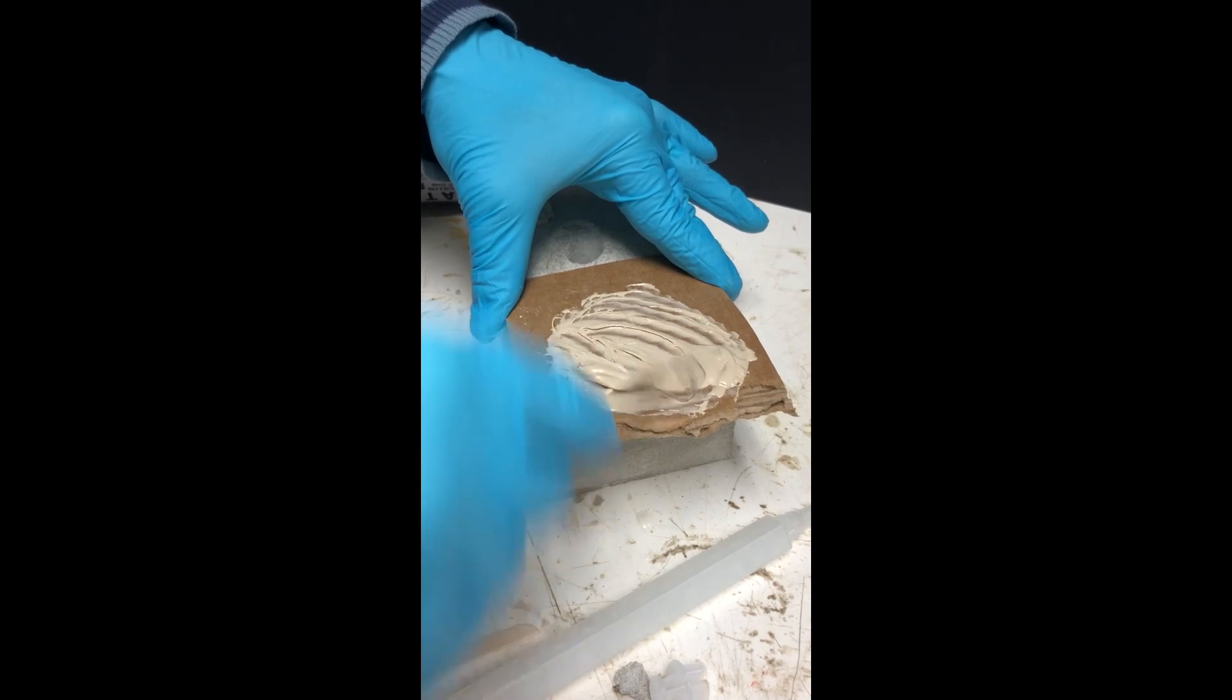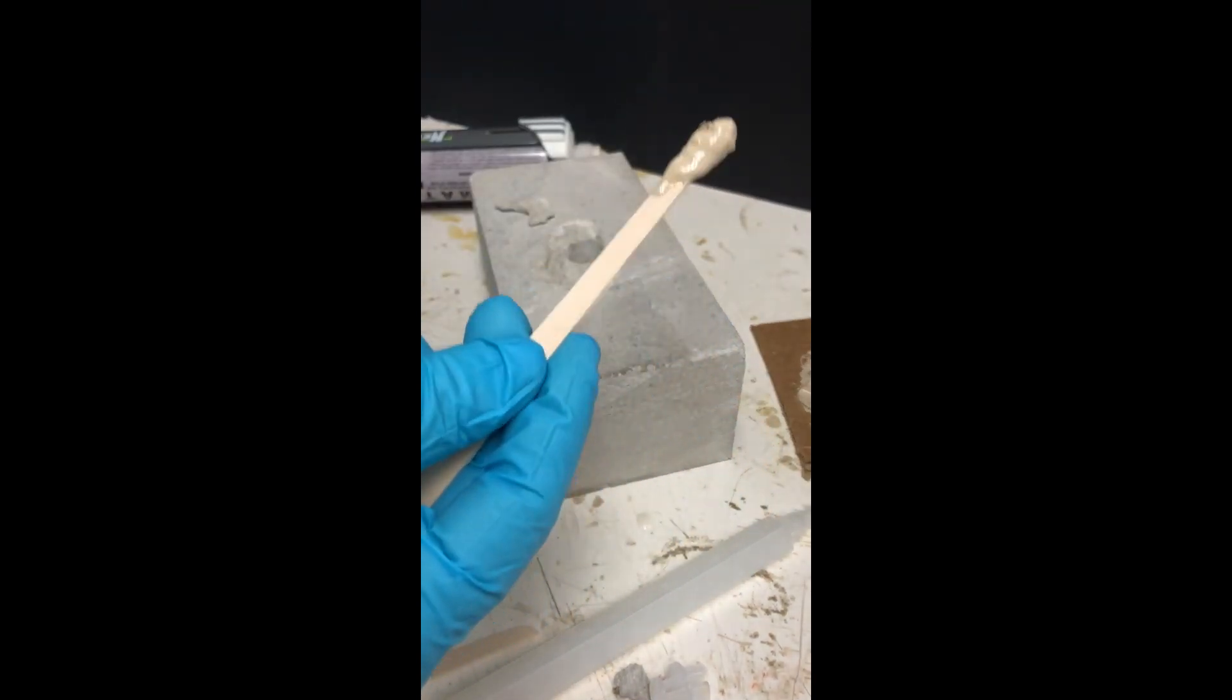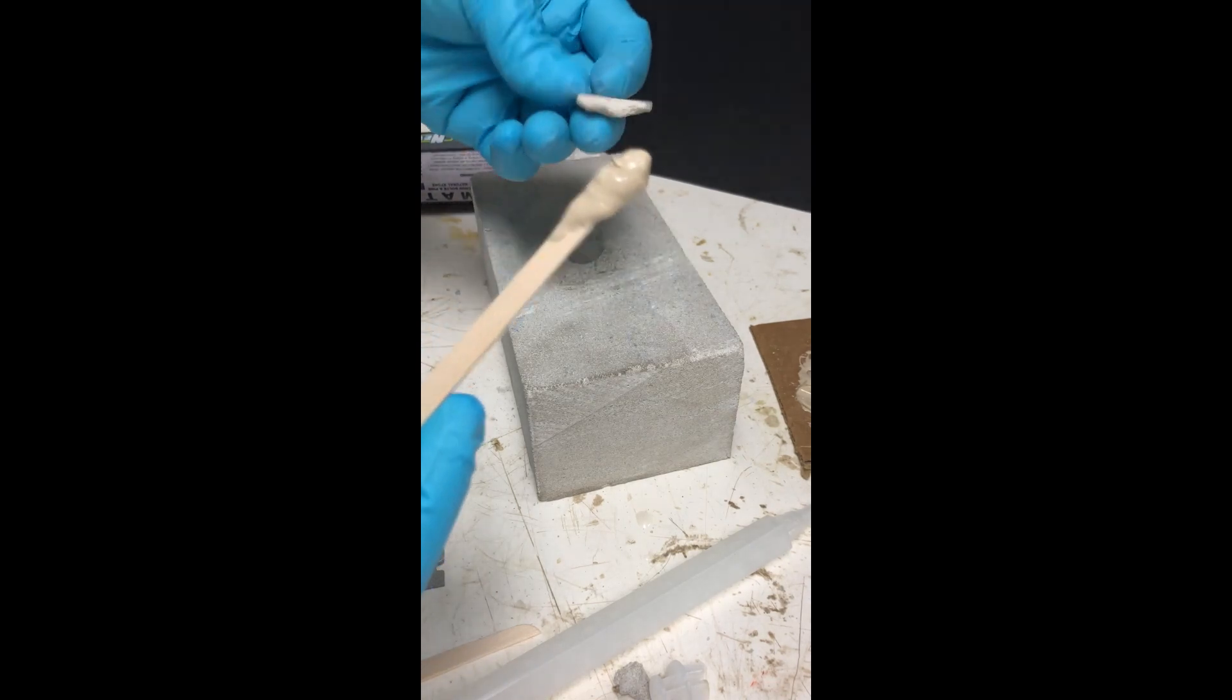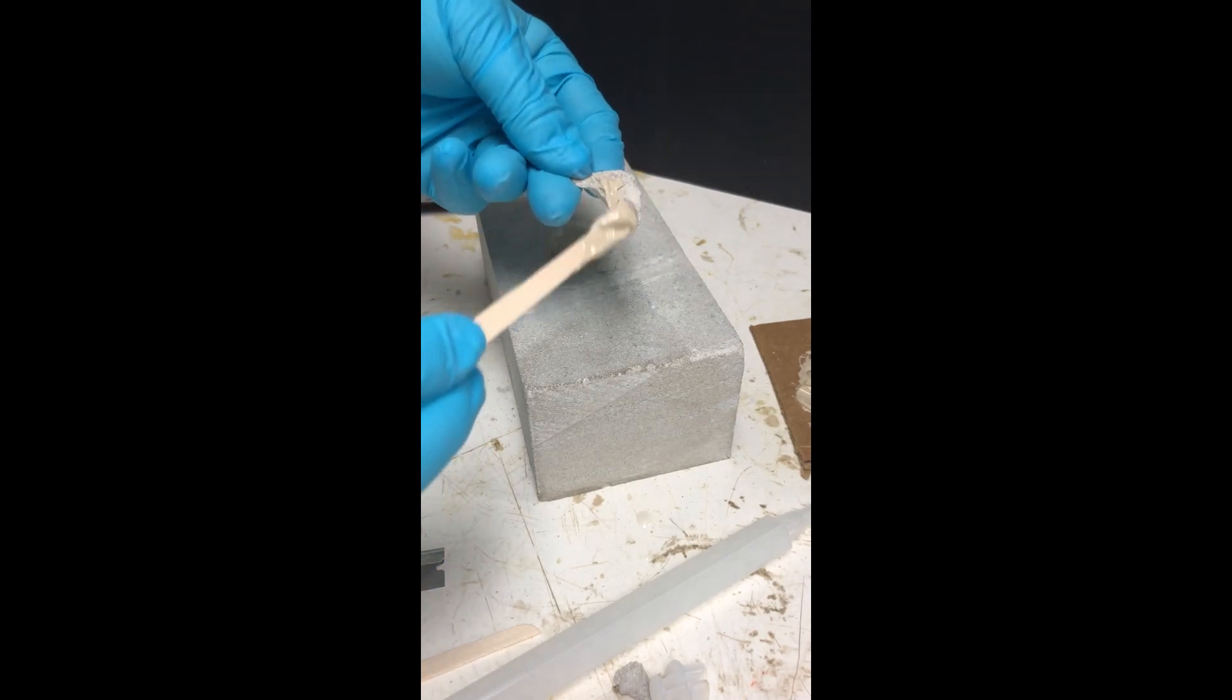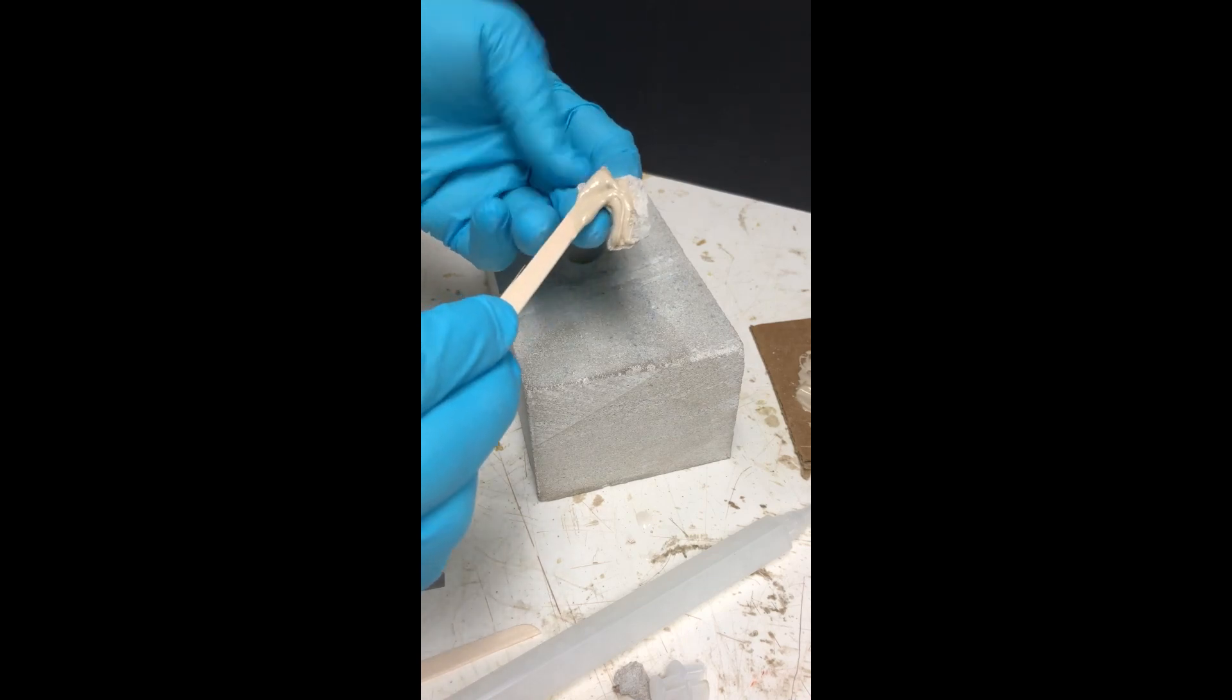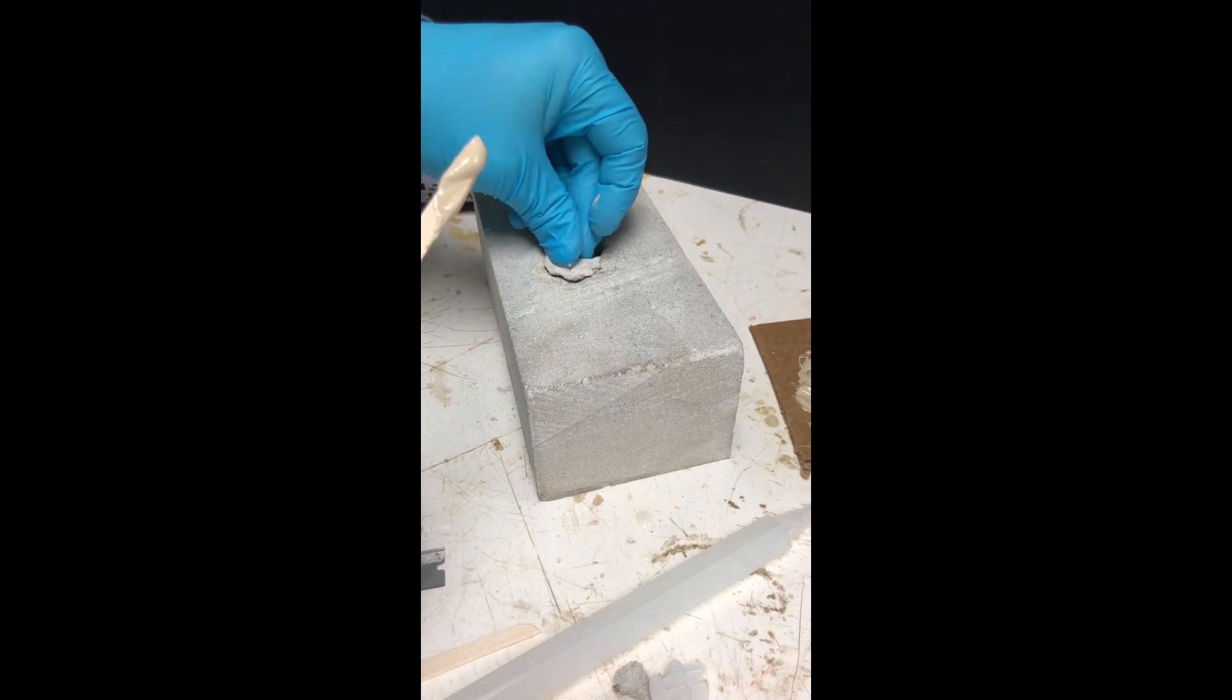So simply take your piece of stone that's chipped off, butter the back of it, and press it into place.